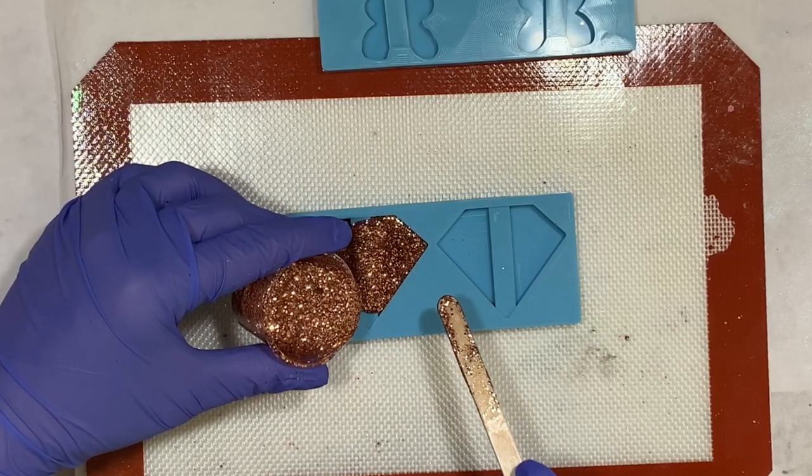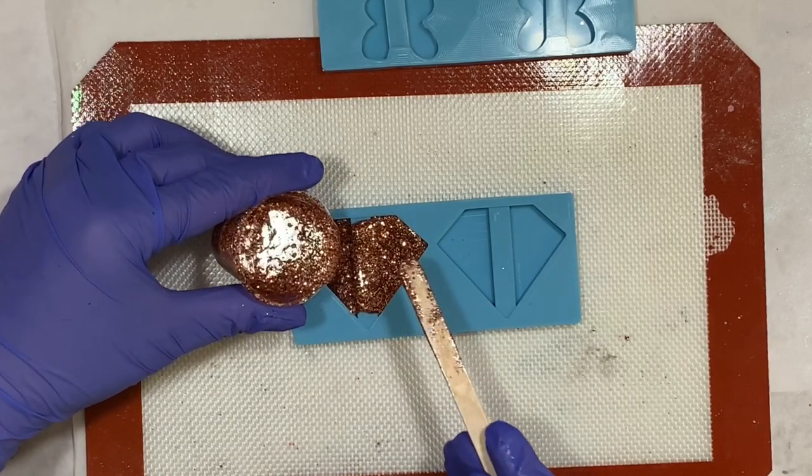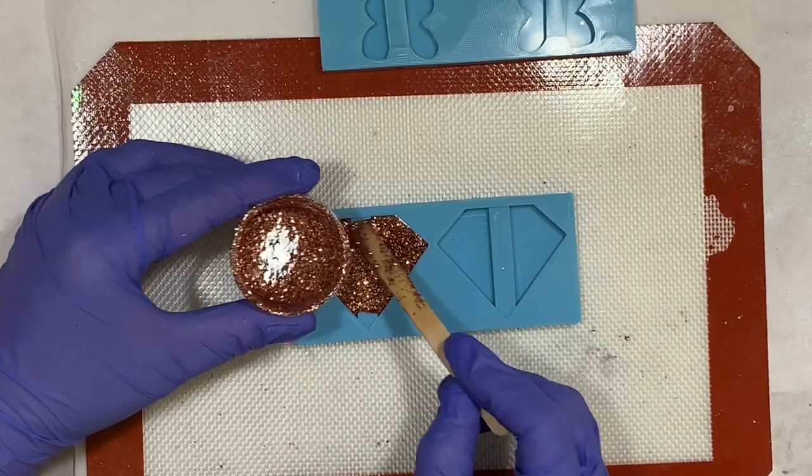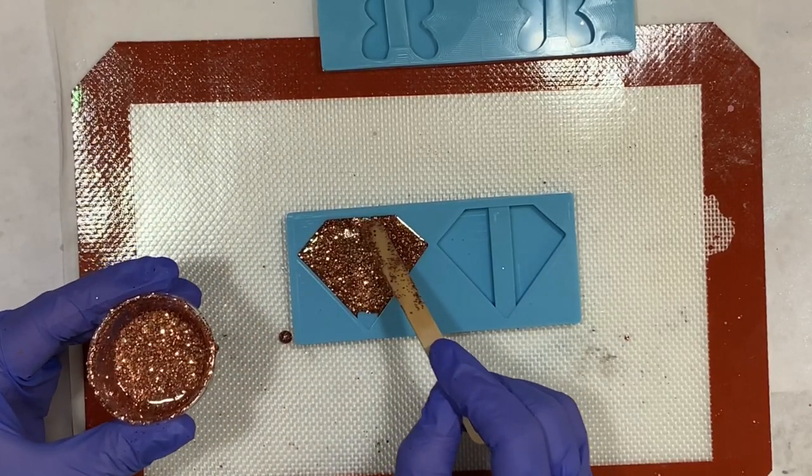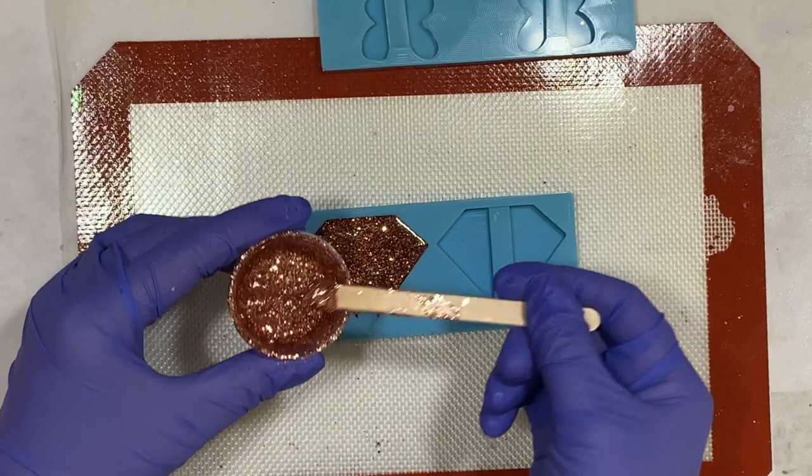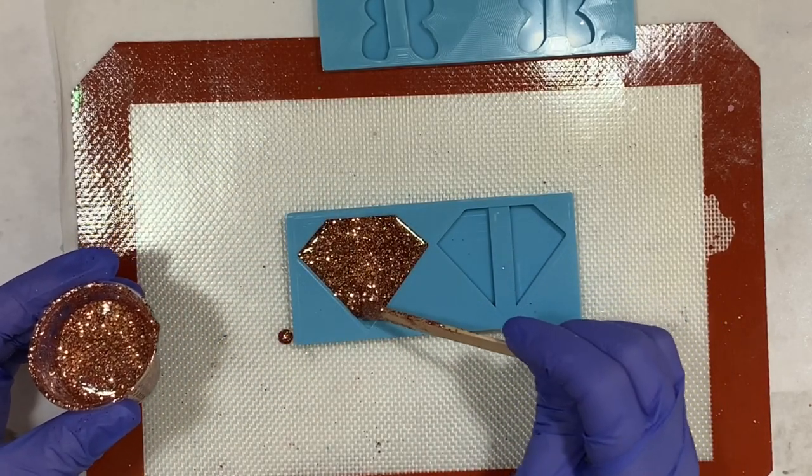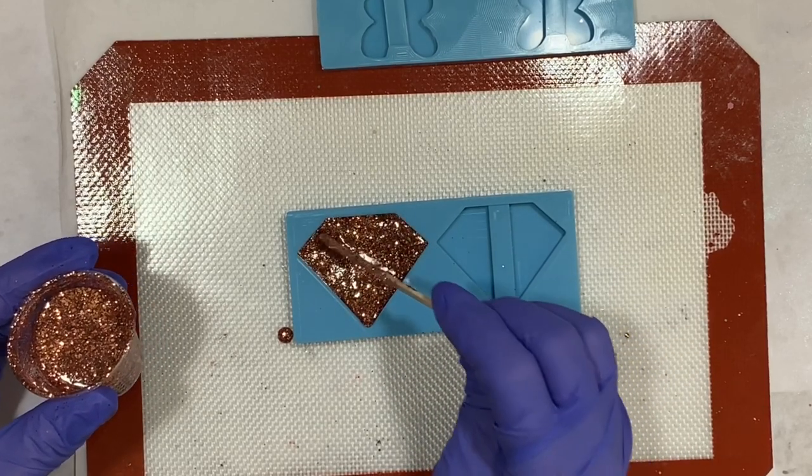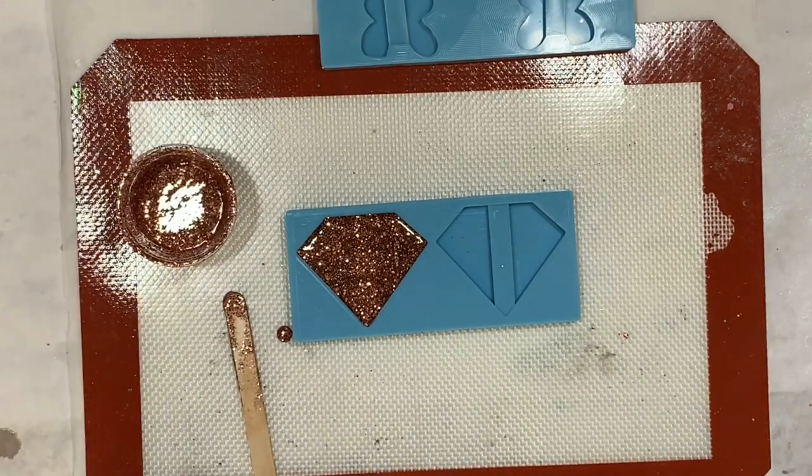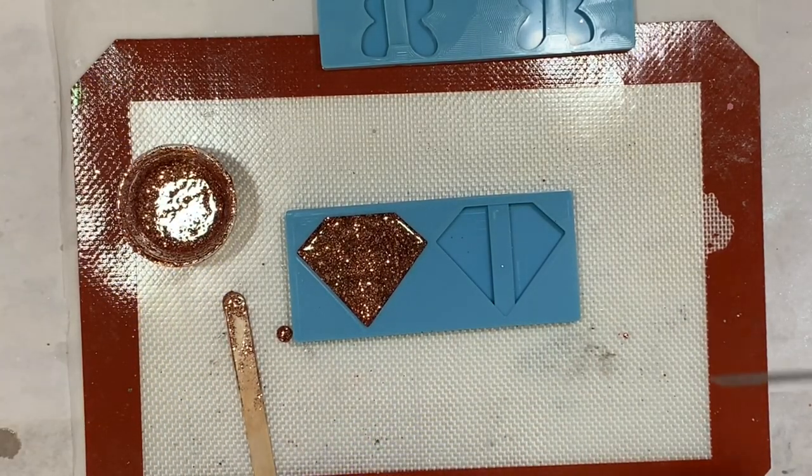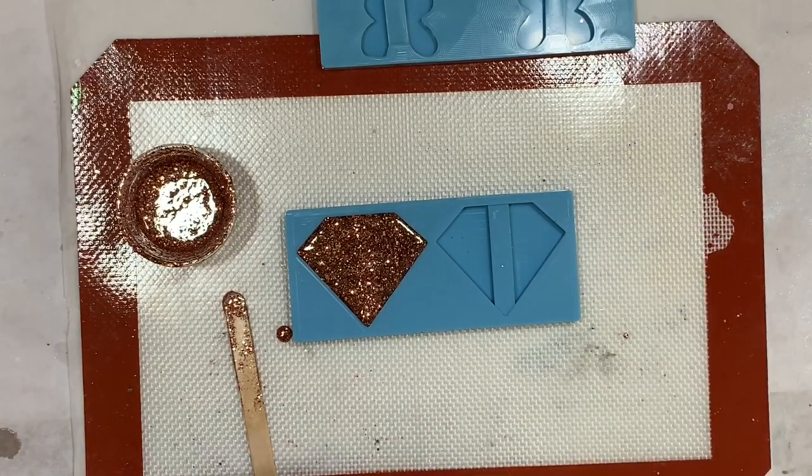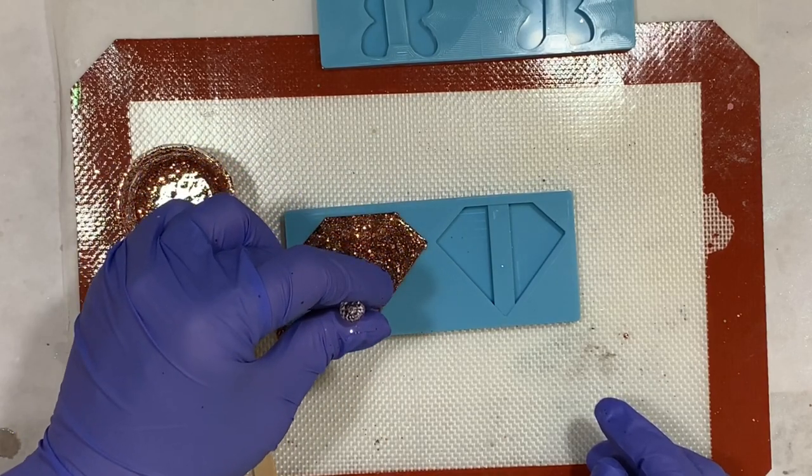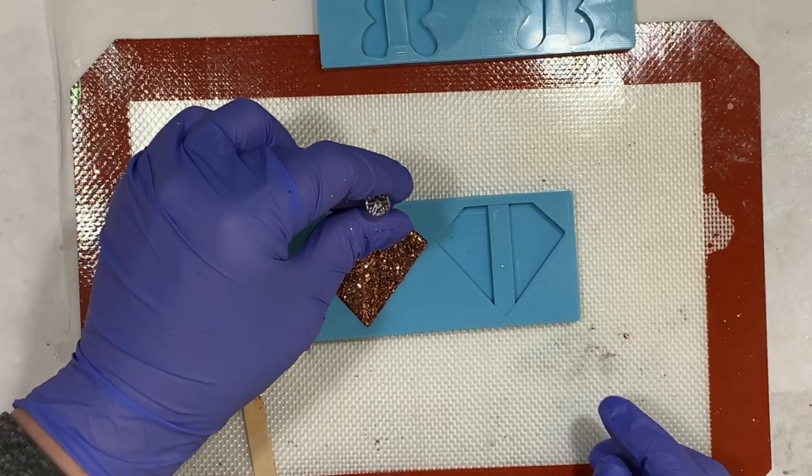It's a super thin layer, but definitely make sure you get it all covered. I like to go in with either muddling tools or with a popsicle stick to get everything filled in. I do like to go with my muddling tool around just to make sure there's no air pockets, especially along the edges because that's where they seem to form the most.